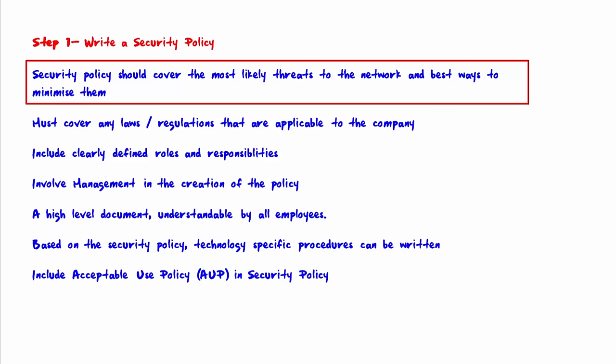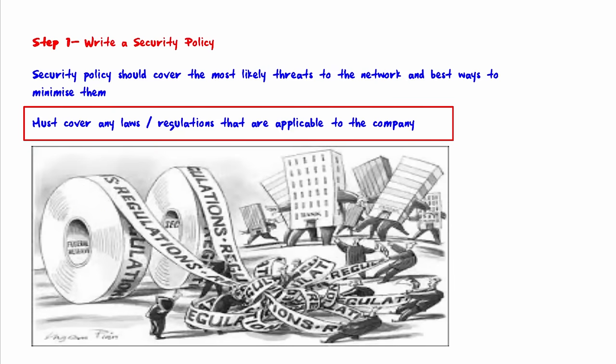You must make sure to cover any laws and regulations that are applicable to your company. For example, Sarbanes-Oxley — most corporations are subject to that. You might be subject to HIPAA if you are a medical company, or if you are using credit cards, there are special regulations for that. You need to make sure that any of those your company needs to abide by are included in the security policy.